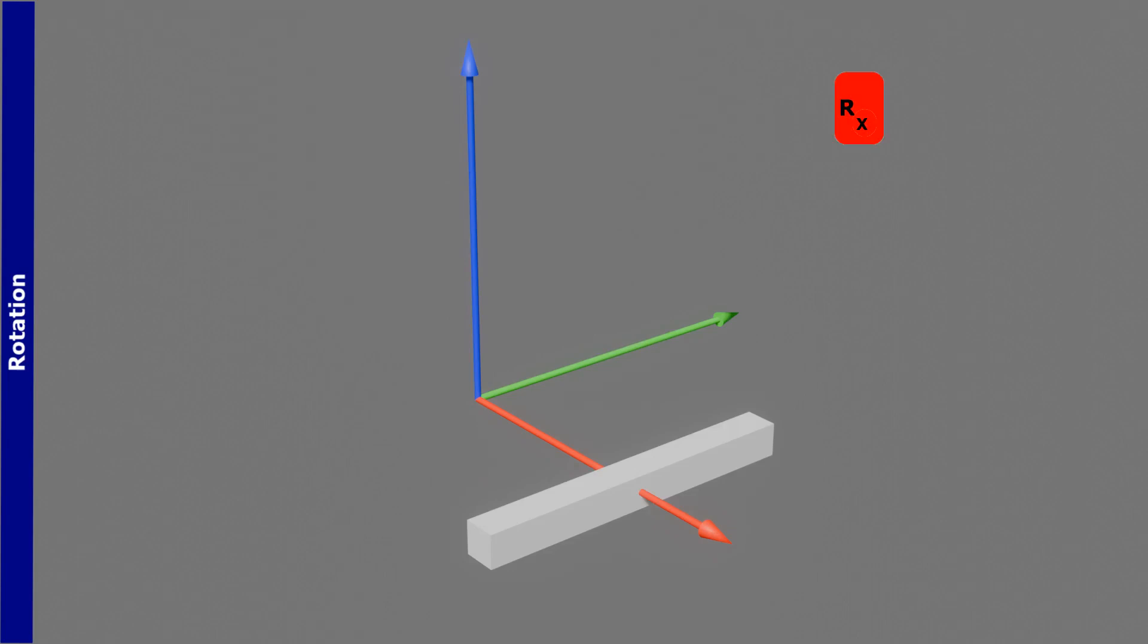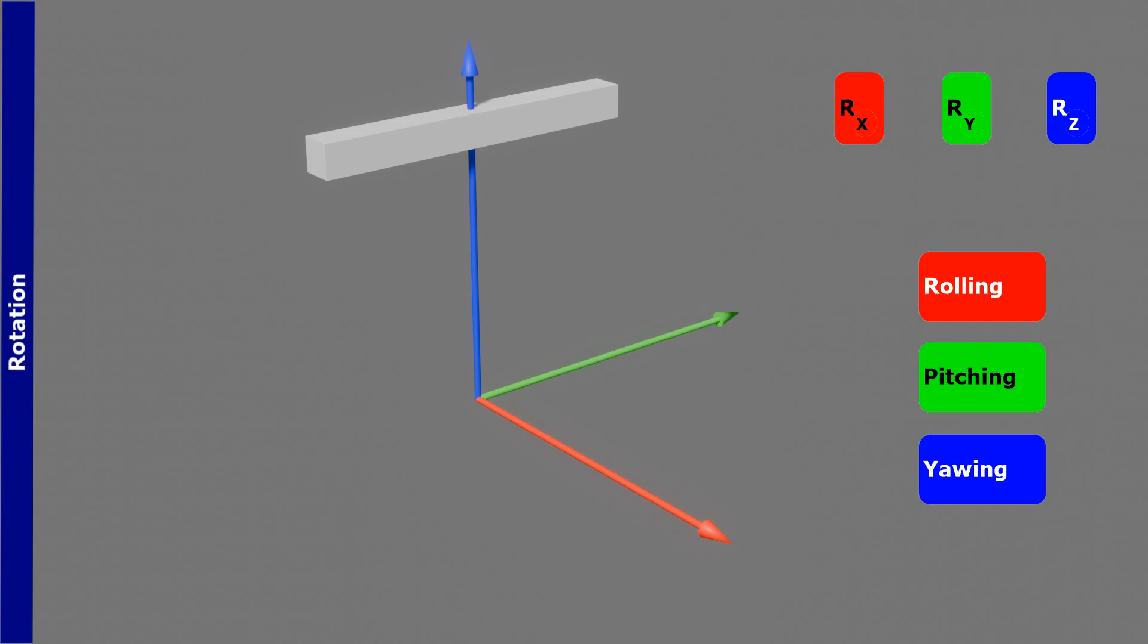For the x-axis, we use rx. It is called rolling motion. For the y-axis, ry, it is called pitching motion. And for the z-axis, rz, it is called yawing motion.